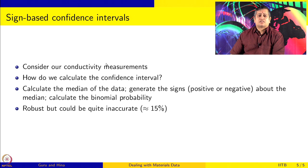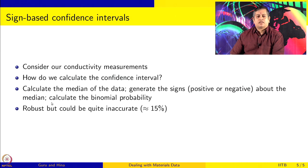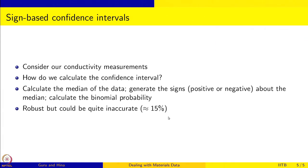You can also give confidence intervals which are sign-based. Let us consider our conductivity measurement as an example. To calculate a sign-based confidence interval, we calculate the median, generate the signs — positive or negative — about this median, and then calculate the binomial probability for so many positives and negatives. It could be a robust method, but it could be quite inaccurate also. We will do this analysis and see how it works out for our conductivity data.